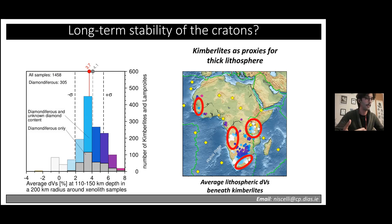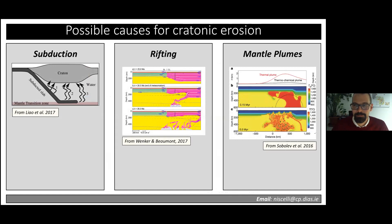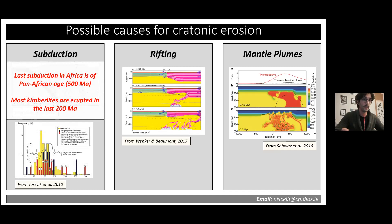What are the possible causes of this cratonic erosion? The main theories are subduction, rifting, and mantle plumes. Subduction can be easily ruled out because the last subduction is believed to be of Pan-African age, about 500 million years ago, while most kimberlites in Africa are about 200 million years old and younger, so we can safely eliminate that option.